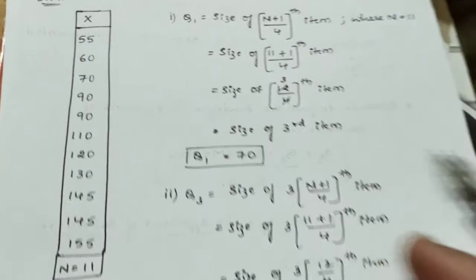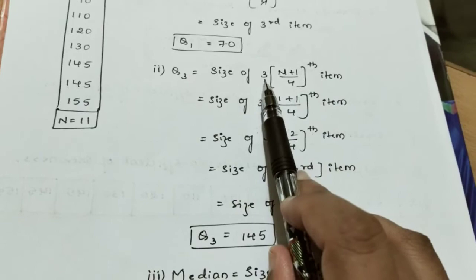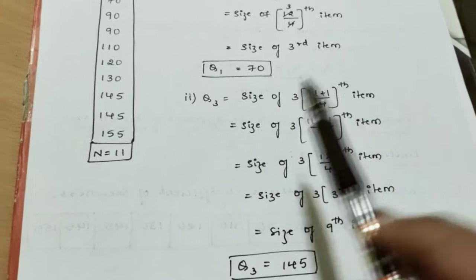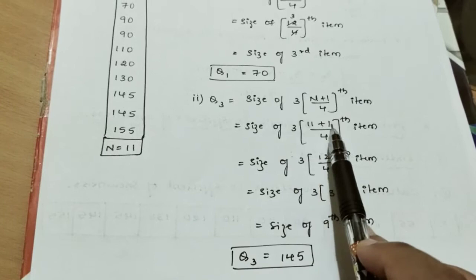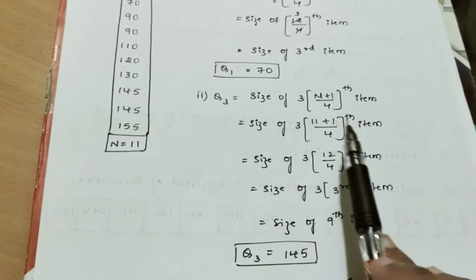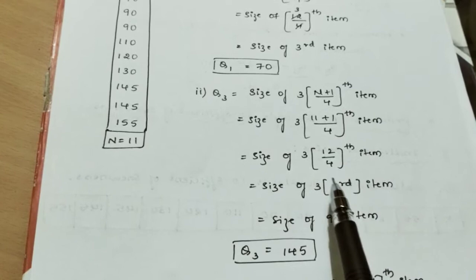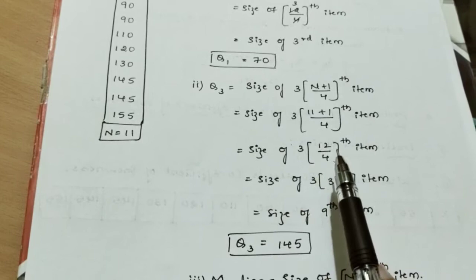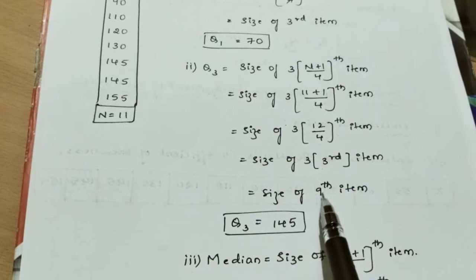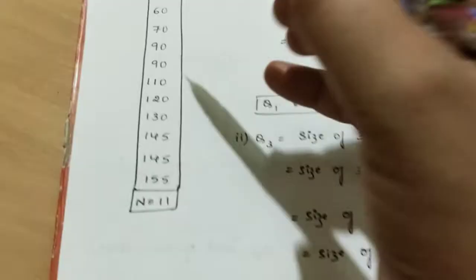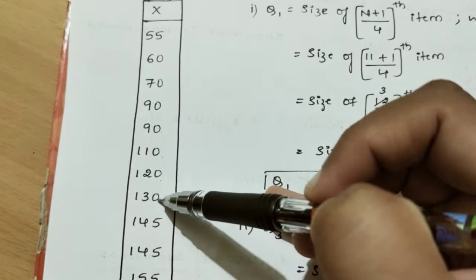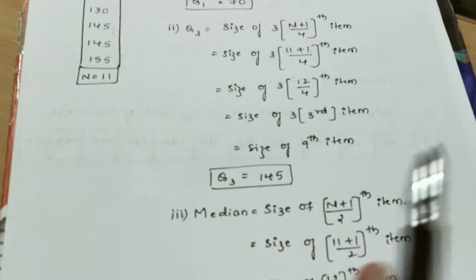Q3 has a slight difference. We use 3 into (n+1) divided by 4th item. So Q3 = size of 3(n+1)/4th item. Substituting n = 11: 3 into 12 divided by 4 = 3 into 3 = 9th item. Counting to the 9th item, it is 145. So our Q3 value is 145.